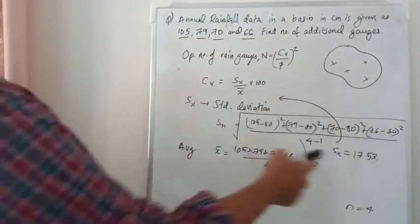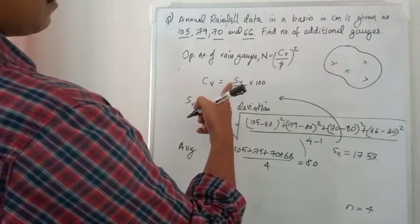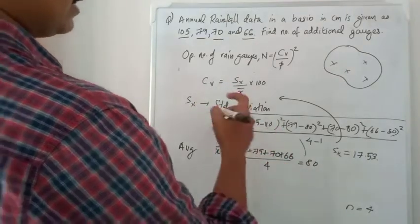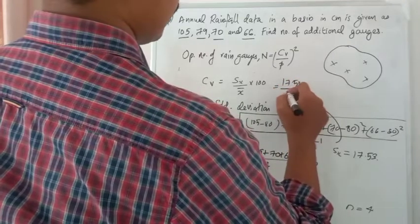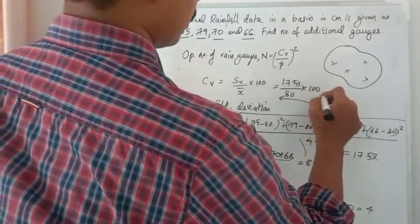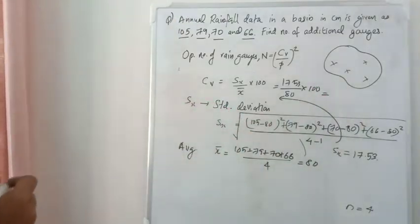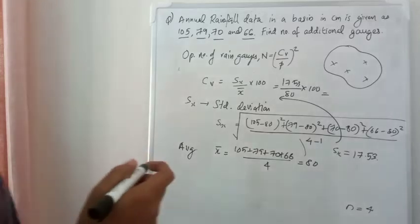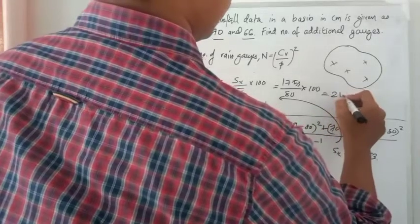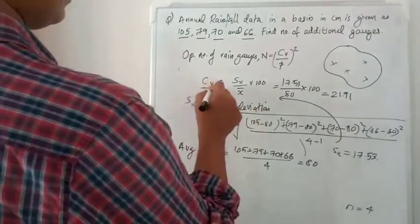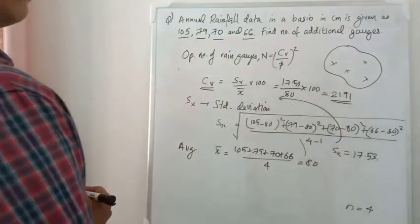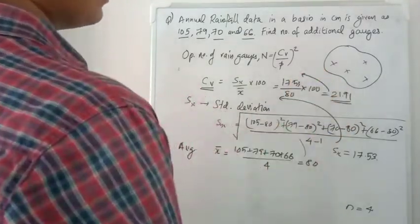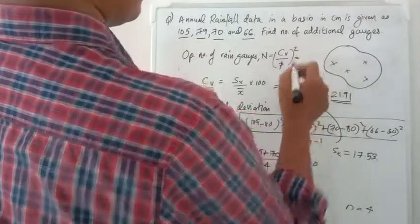Substituting back: SX = 17.53 and X̄ = 80, so CV = 17.53 / 80 × 100 = 21.91. So CV is 21.91.